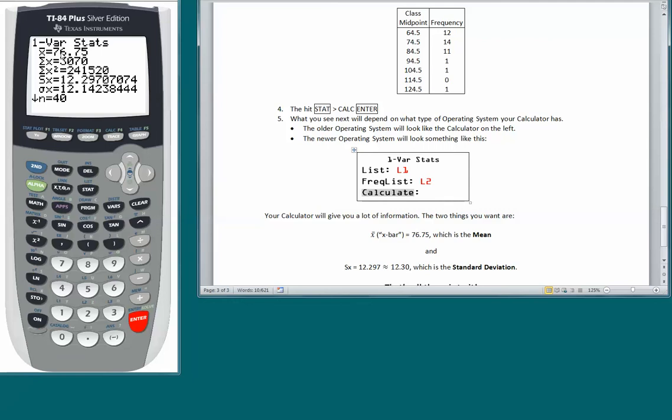So in this case, the x-bar, the mean, was exactly 76.75. That's two decimal places, and that's exactly what we want for a descriptive statistic when the data have one decimal place. The standard deviation was a little bit trickier. You can see here 12.297 blah blah blah. We want to round that to two decimal places.